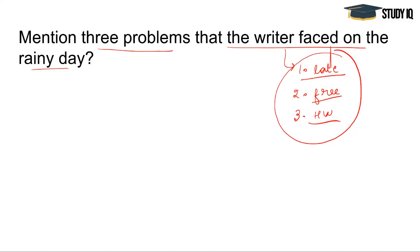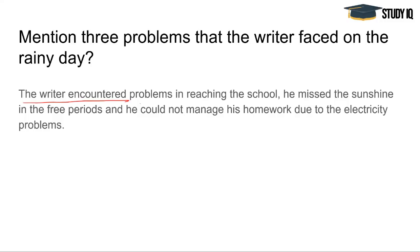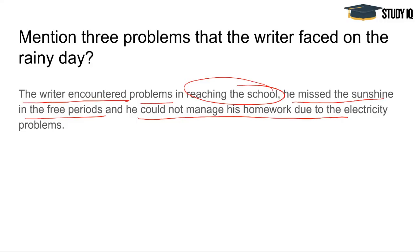So the three problems faced by the author are: that he reached late at school, he missed the free period because he could not play, and he could not complete his homework because of the electricity not being present. Aapko achhi tarah se apne shabdon mein, main points ko include karte hi, apni hi language mein answer likhna hai. Passage ke andar se copy paste nahi karna hai, lekin apne identify karna hai ki us question ka sahi uttar kya hai, aur uske baad apne shabdon mein likhna hai.